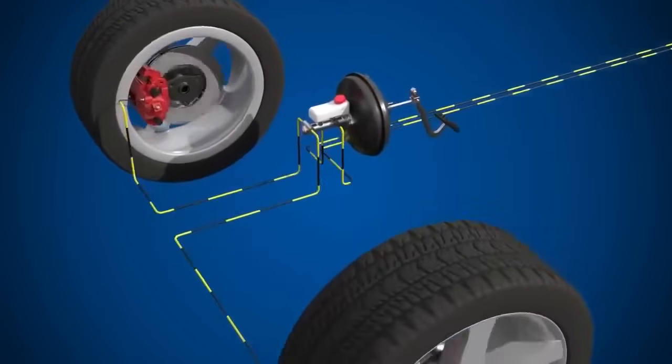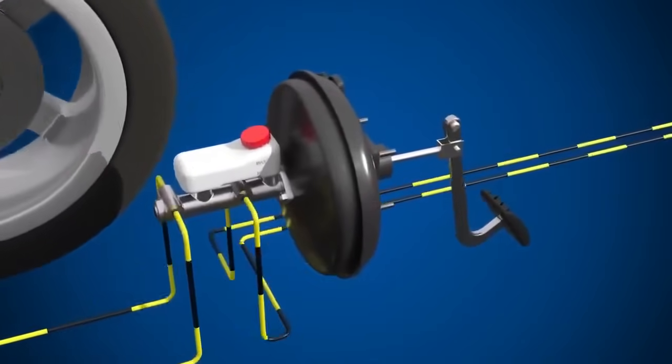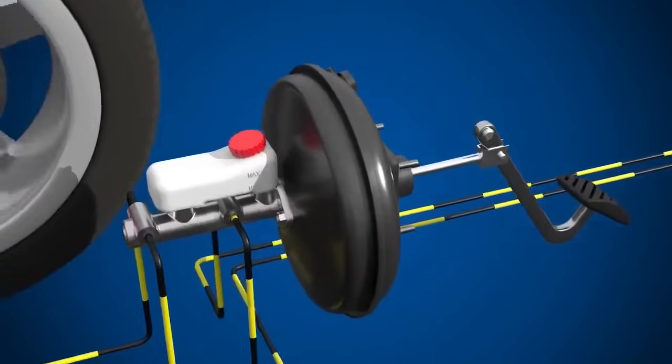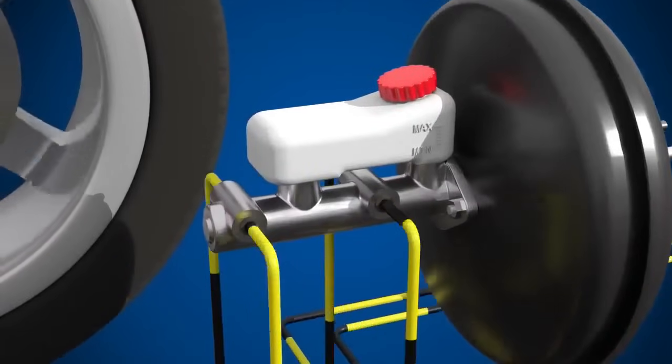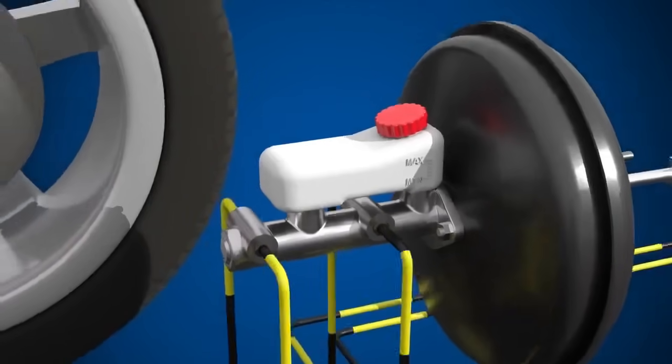Pressing the brake pedal extends a pushrod through the brake servo and into the master cylinder. The master cylinder pressurizes the entire hydraulic system and forces brake fluid through the hydraulic lines.